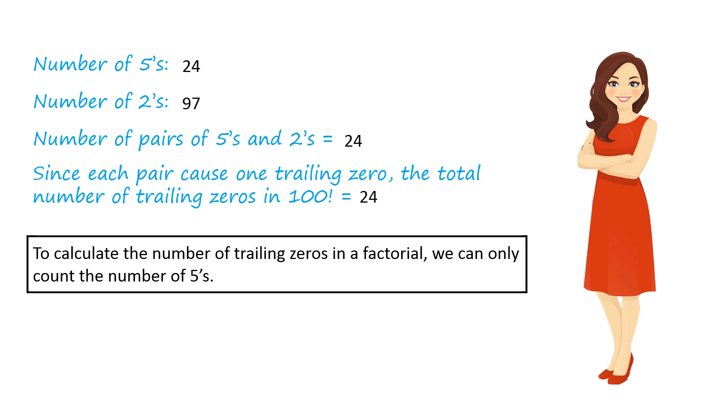In fact, to calculate the number of trailing zeros in a factorial, we can only count the number of 5s, because it equals the number of pairs of 5s and 2s in the multiplication.